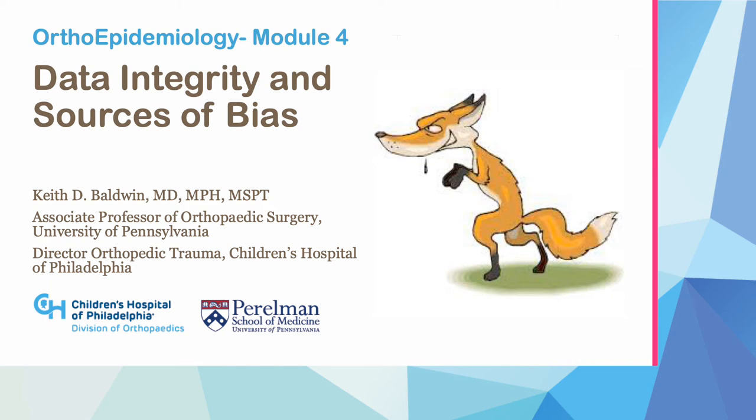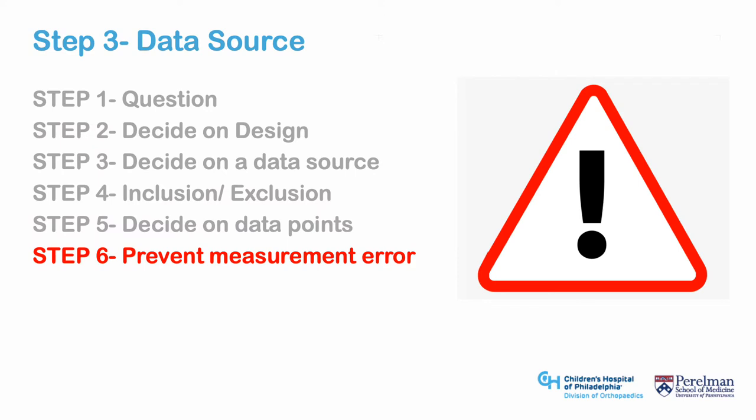Welcome to Orthoepidemiology Module 4, Data Integrity and Sources of Bias. Following power analysis and picking your data points, it is important to consider sources of error. This is important in both prospective and retrospective research. Bias will be much more of an issue with retrospective research, but can plague prospective research as well with poor design choices.